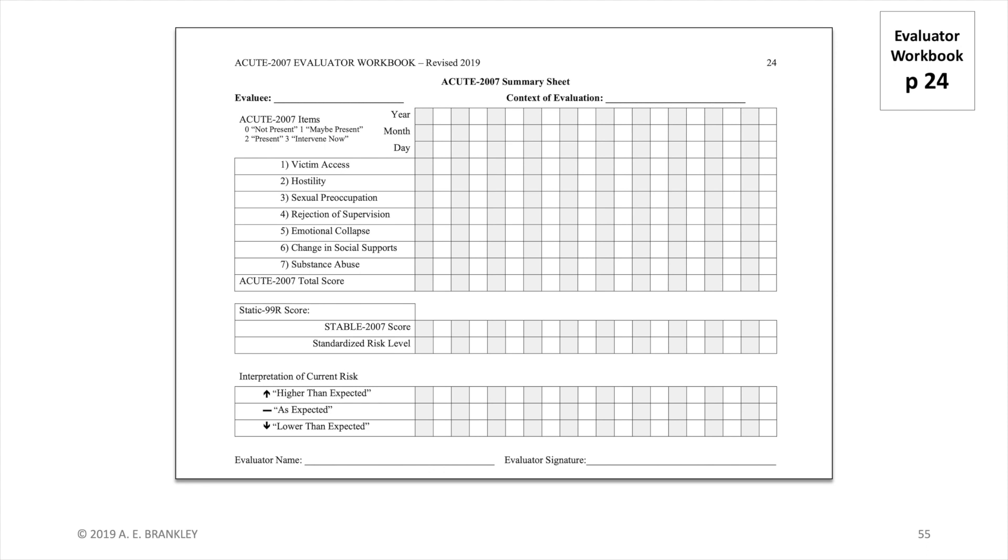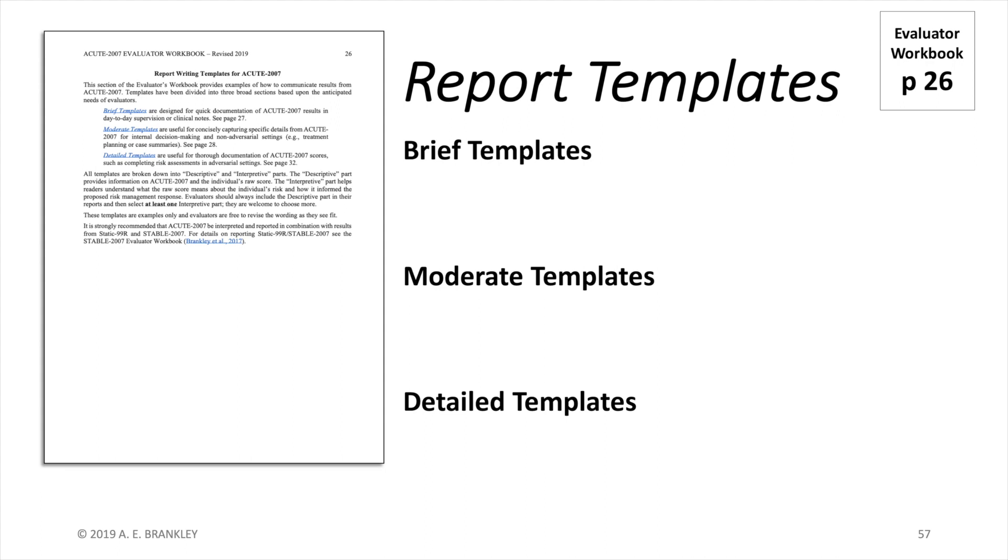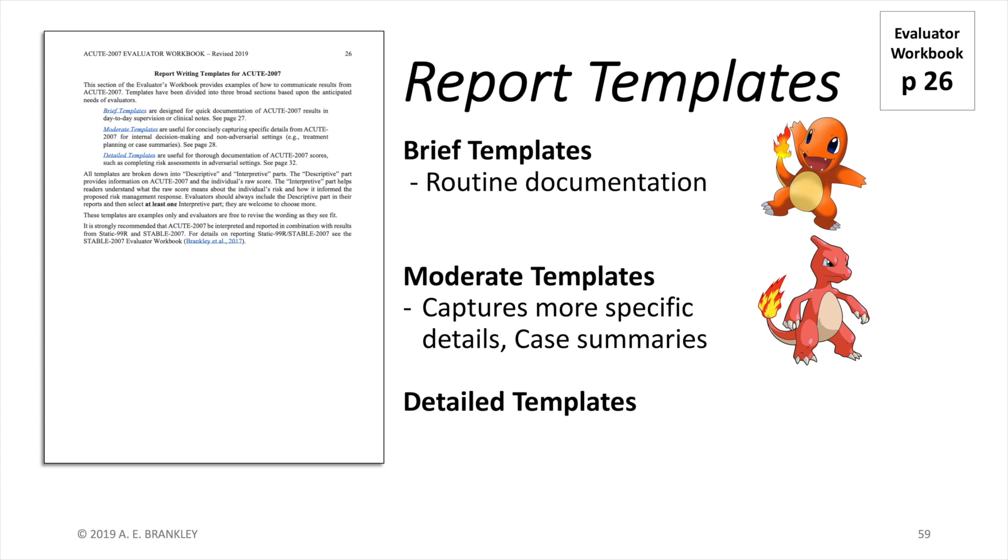If you haven't seen the combination rules video yet, I actually created this summary table for a client because I knew staff were going to have regular questions about his progress in the community. And yes, there is an example of this too in the workbook. There are several reporting templates for you to choose from. These are just our recommended way of communicating acute scores. Please use and adapt them as you see fit. The first set of templates are brief and tiny, like little Charmander here. They are only a few lines so it is easy to include in handwritten notes or in day-to-day documentation.